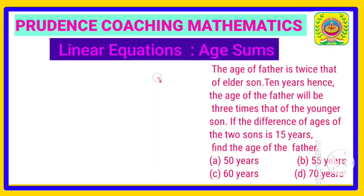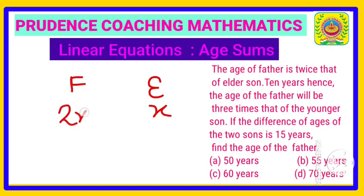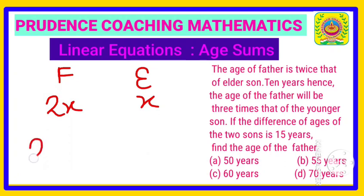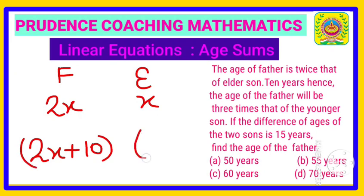According to the question, assume the present age of the eldest son is x. Then the age of the father will be twice the eldest son, that is 2x. After 10 years, the father's age will be 2x plus 10.